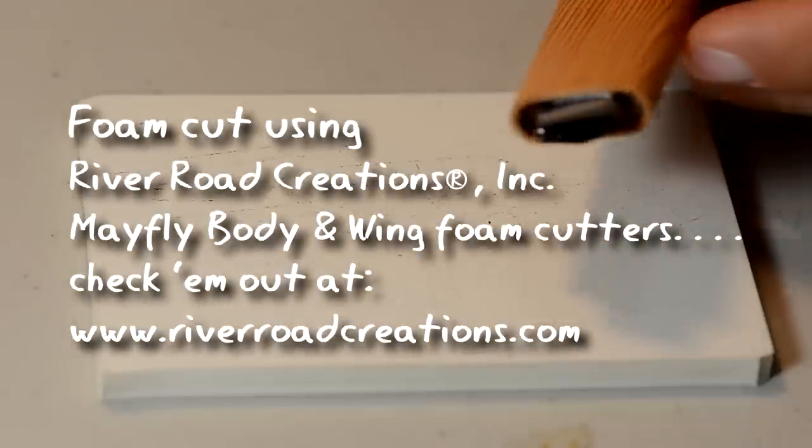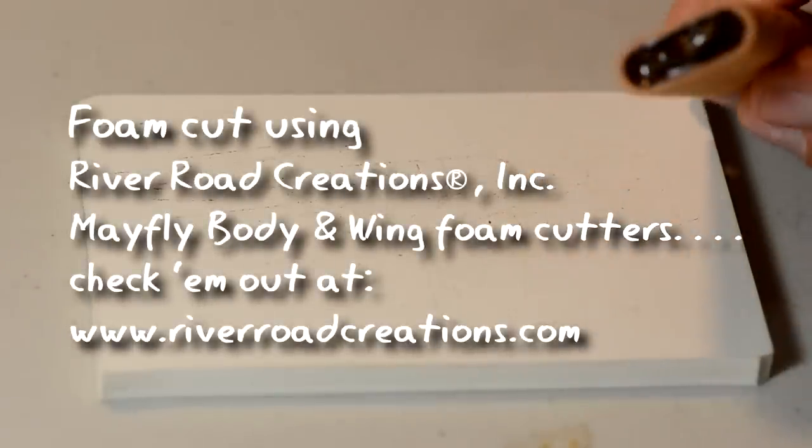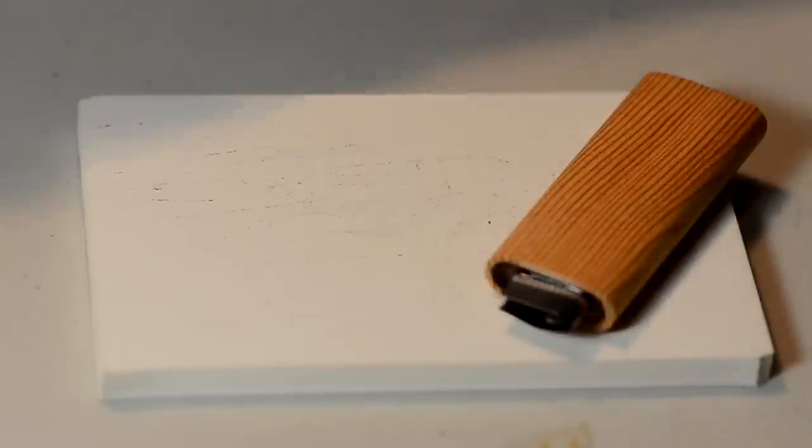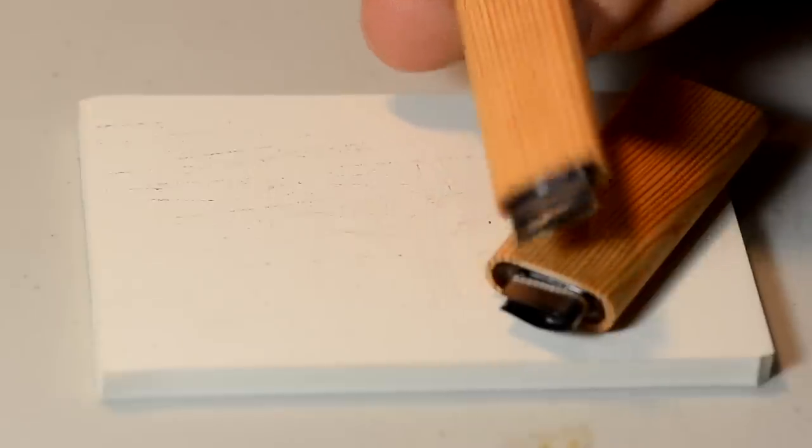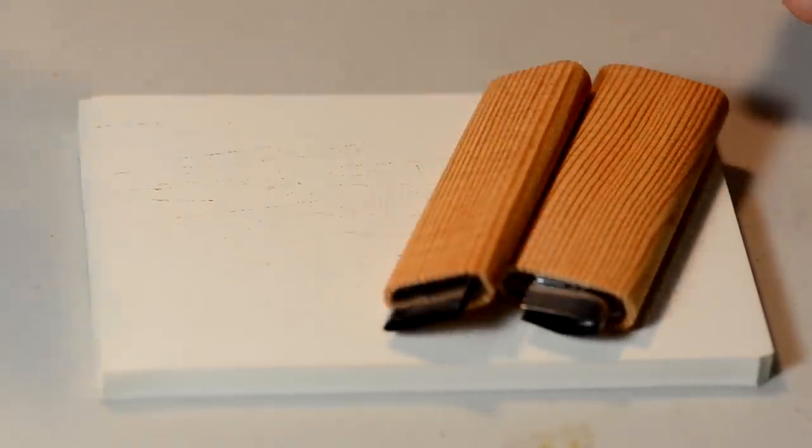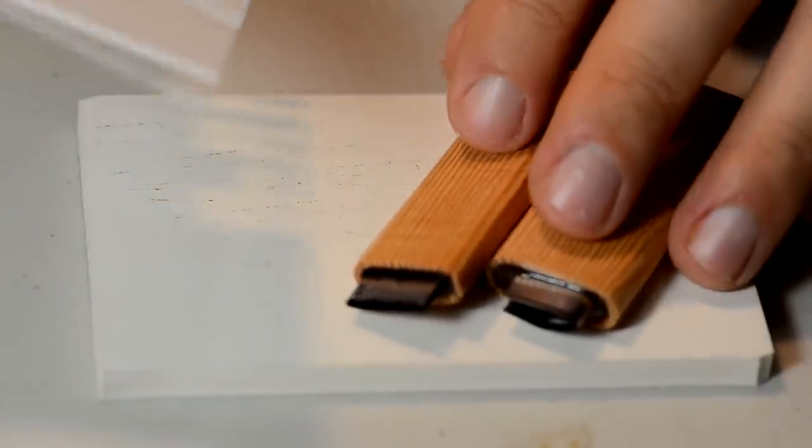To start off, we're going to take our mayfly wing cutter, this is the third largest size, and our mayfly body cutter. I usually go a size down on that one, and I'm going to cut the body and the wing.